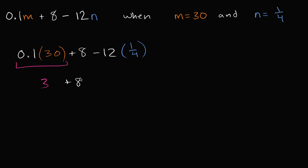Then we have 3 plus 8. And then we're going to have minus, well, what is 12 times 1 fourth? That's going to be 12 fourths or 12 divided by 4 which is going to be equal to 3.